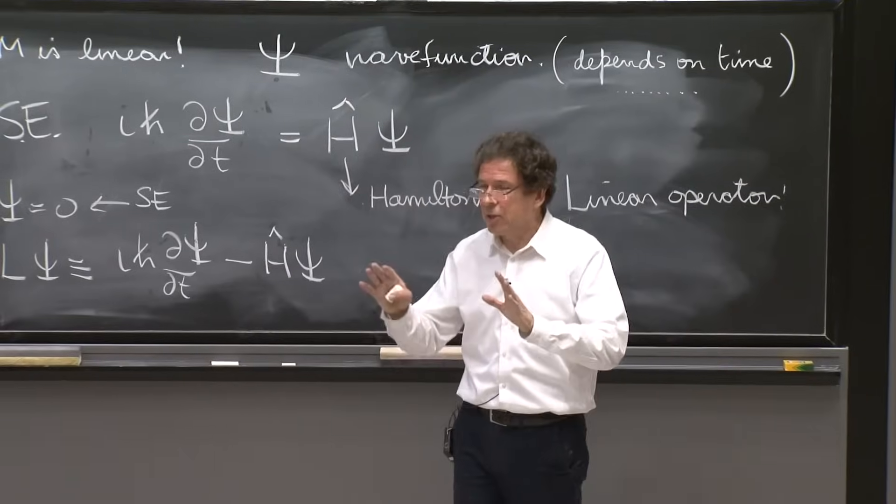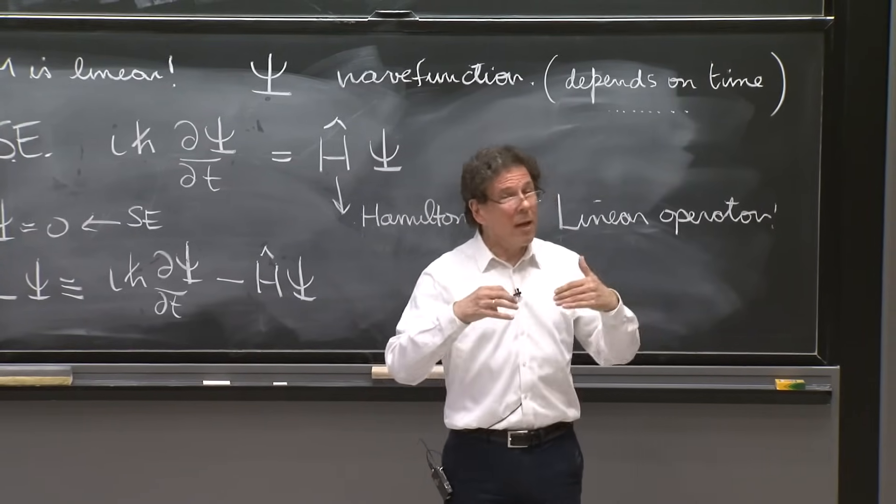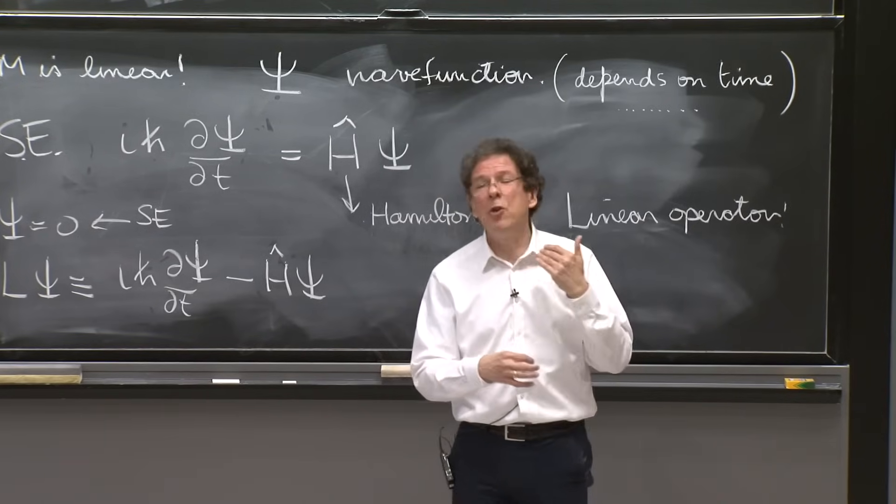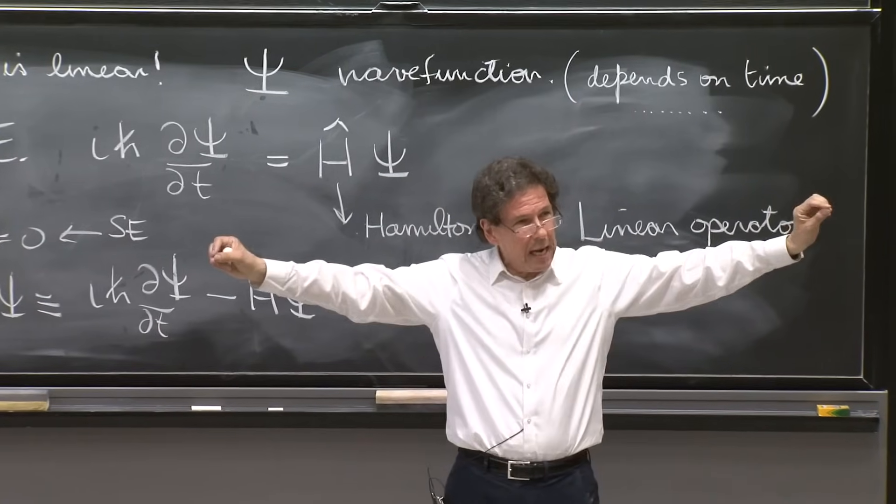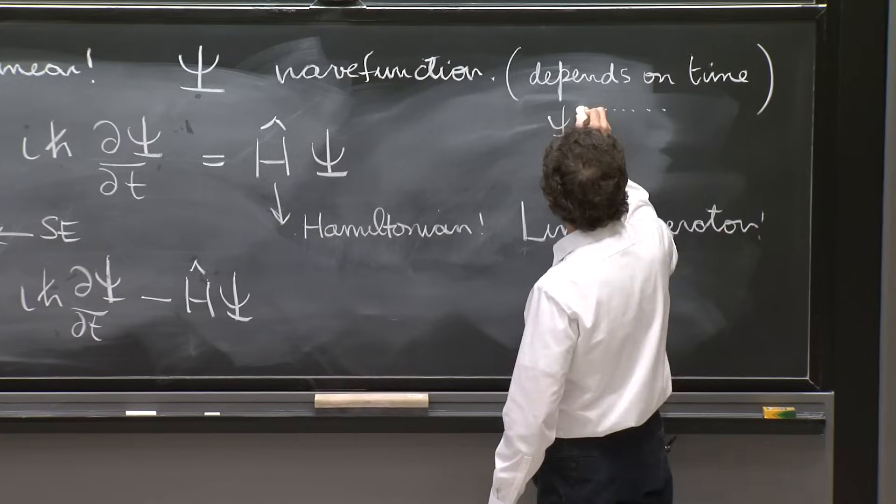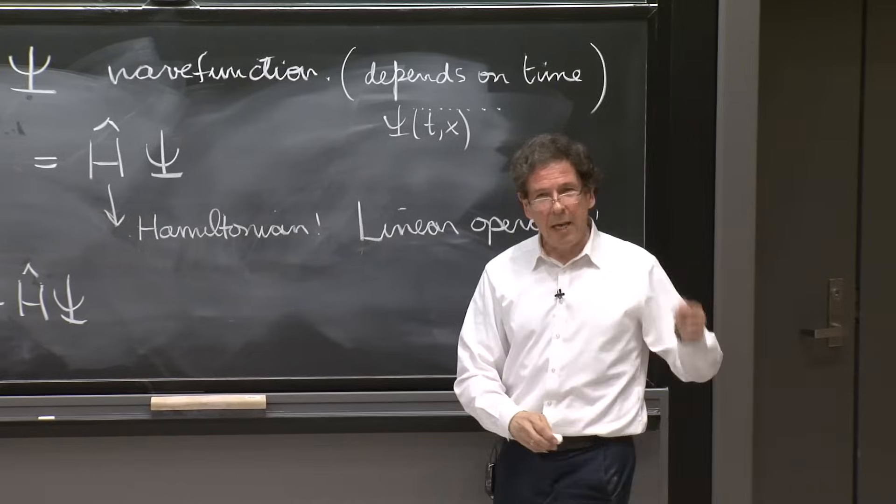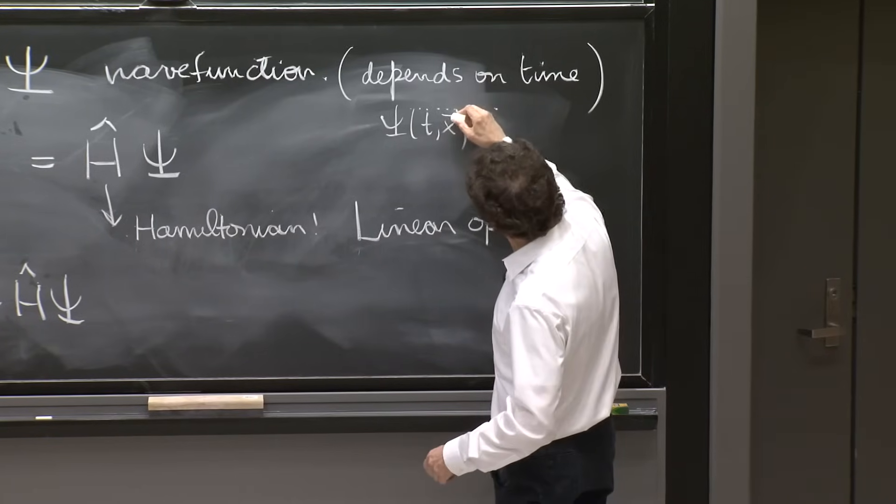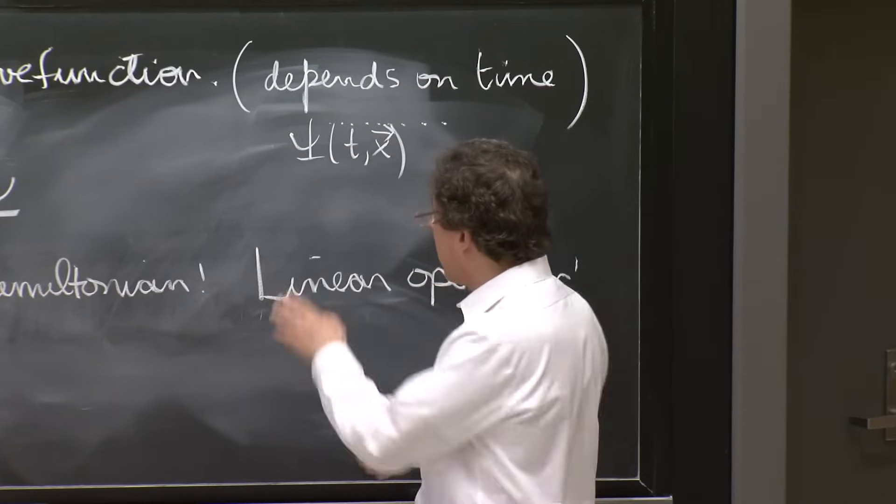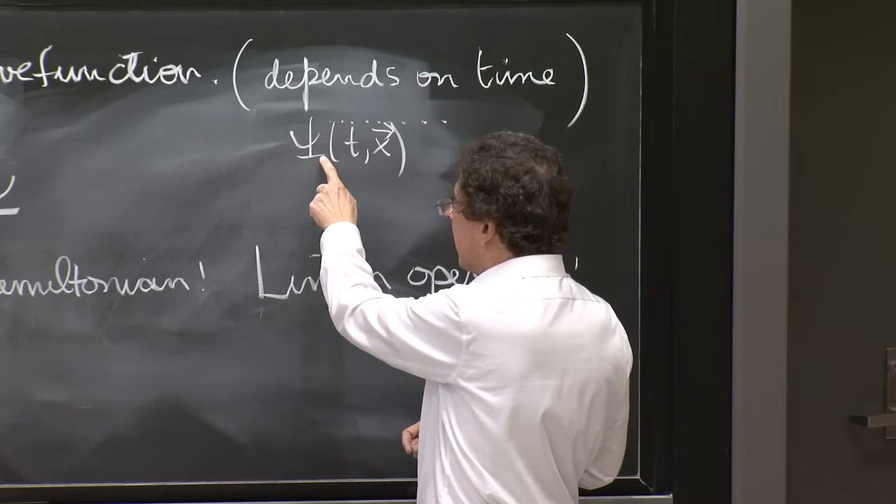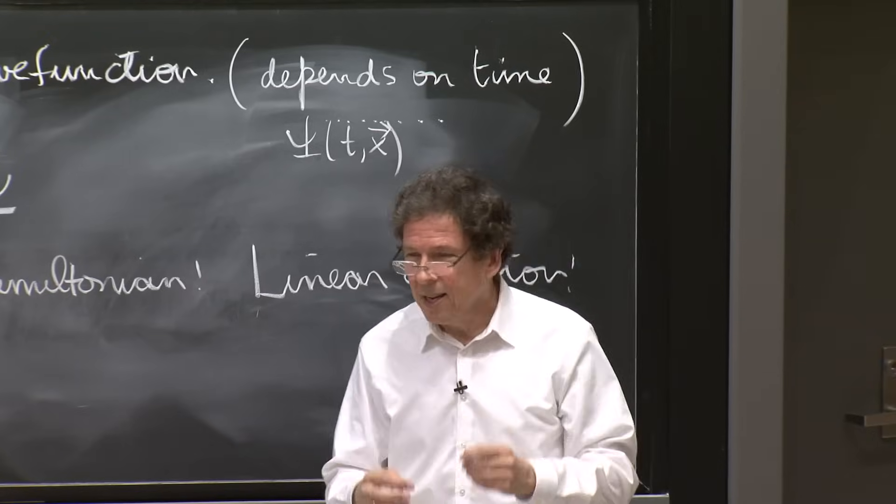For any physical system that you have, you will have a wave function. And you will have a Hamiltonian. And the Hamiltonian is for you to invent or for you to discover. So if you have a particle moving on a line, the wave function will depend on time and on x. If you have a particle moving in three dimensions, it will depend on x vector. It may depend on other things as well. Or it may be like one particle has several wave functions.